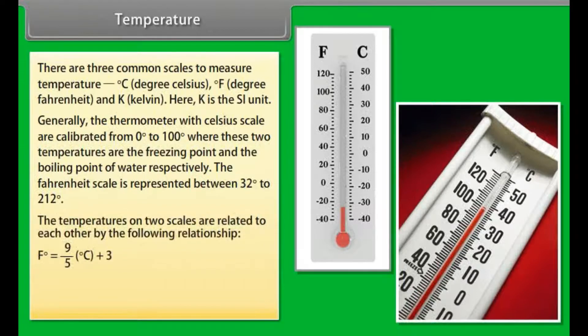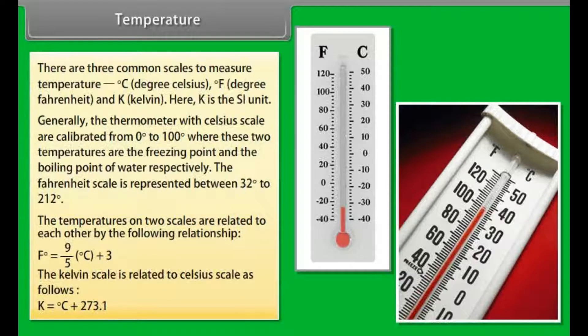The temperatures on two scales are related to each other by the following relationship: °F = (9/5)°C + 32. The Kelvin scale is related to Celsius scale as follows: K = °C + 273.1.